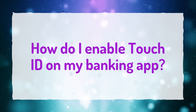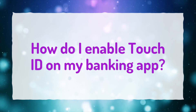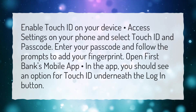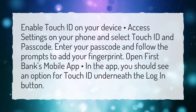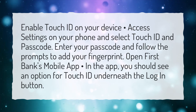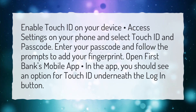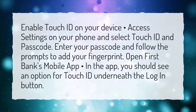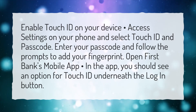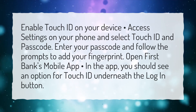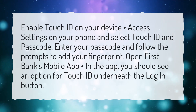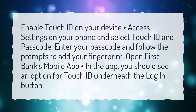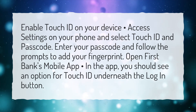How do I enable Touch ID on my banking app? Enable Touch ID on your device by accessing Settings on your phone and selecting Touch ID and Passcode. Enter your passcode and follow the prompts to add your fingerprint. Open FirstBank's mobile app. In the app, you should see an option for Touch ID underneath the login button.